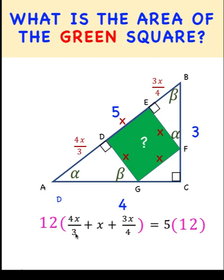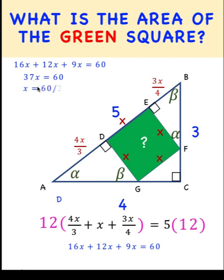12 divided by 3 equals 4 times 4x equals 16x. 12 times x is 12x. 12 divided by 4 is 3 times 3x is 9x, equals 5 times 12, which is 60. Let's continue our computation here: 16x plus 12x plus 9x equals 37x, and then copy 60. And so finally, divide by 37 to get x equals 60 over 37.